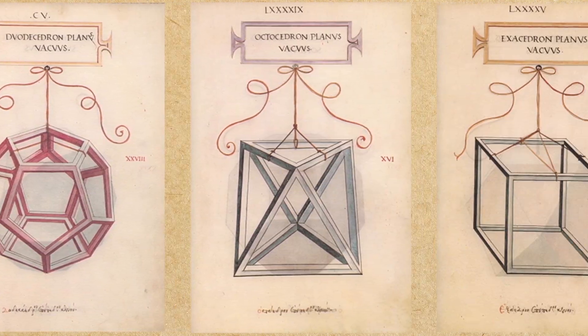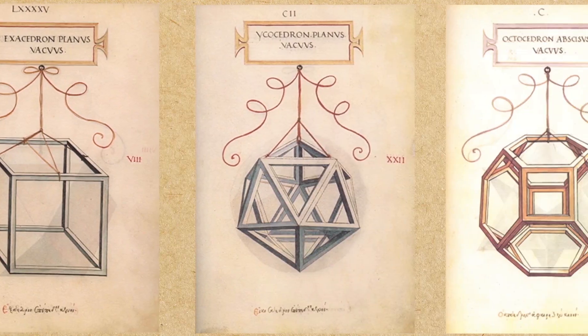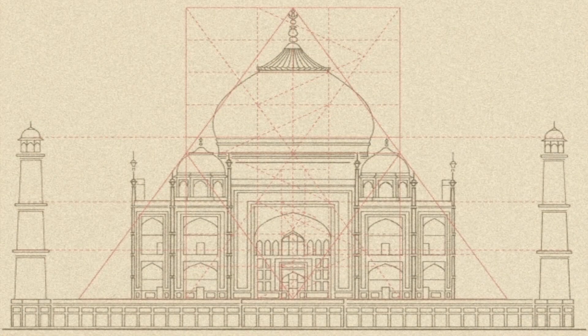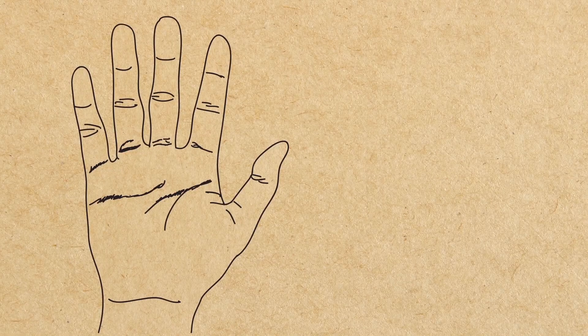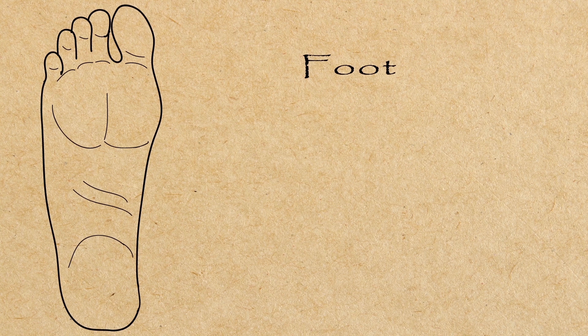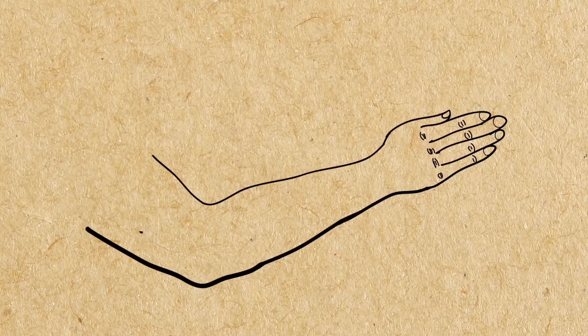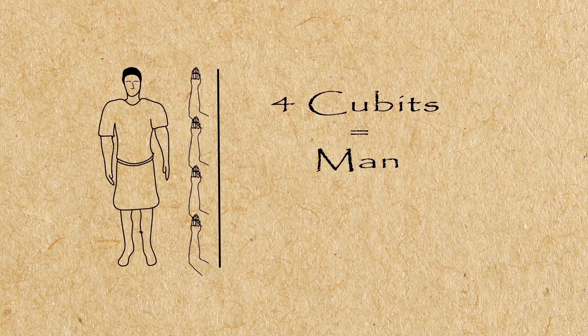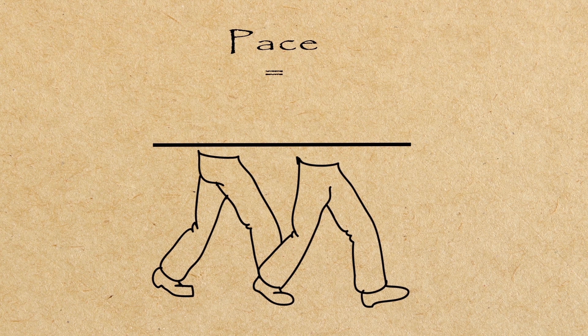According to Vinci, Vitruvius the architect puts in his work on architecture that the measurements of man are in nature distributed in this manner. That is, a palm is four fingers, a foot is four palms, a cubit is six palms, four cubits make a man, and a pace is four cubits.